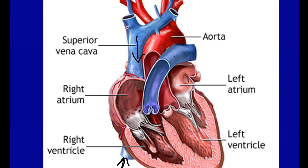After blood goes to the lungs, it receives oxygen, offloads CO2, and returns to the heart through the pulmonary veins — the only oxygenated veins in the body. The pulmonary veins bring blood to the left atrium. From the left atrium, it's pumped down into the left ventricle through another AV valve. On the left side, we call this the mitral valve, sometimes referred to as the bicuspid valve because it has two cusps.